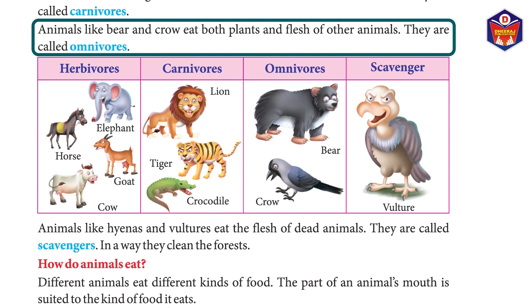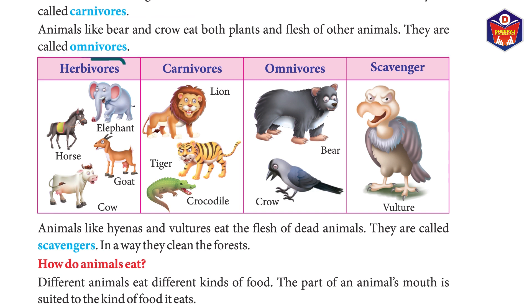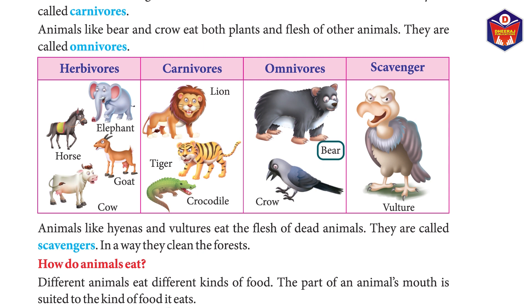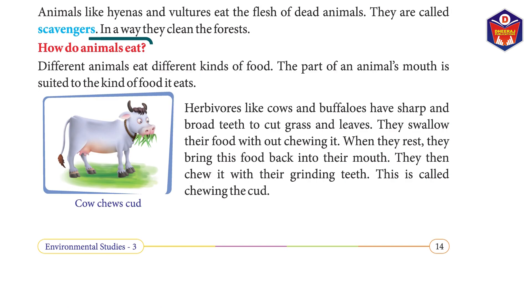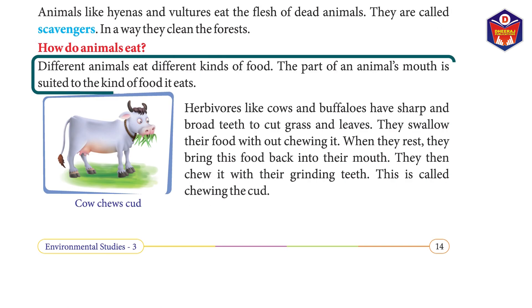Animals like bear and crow eat both plants and flesh of other animals; they are called omnivores. Herbivores: elephant, horse, goat, cow. Carnivores: lion, tiger, crocodile. Omnivores: bear, crow. Animals like hyenas and vultures eat the flesh of dead animals; they are called scavengers. In a way, they clean the forests.